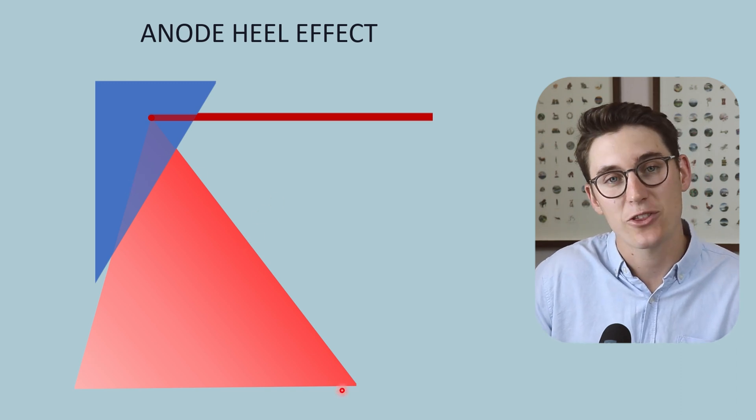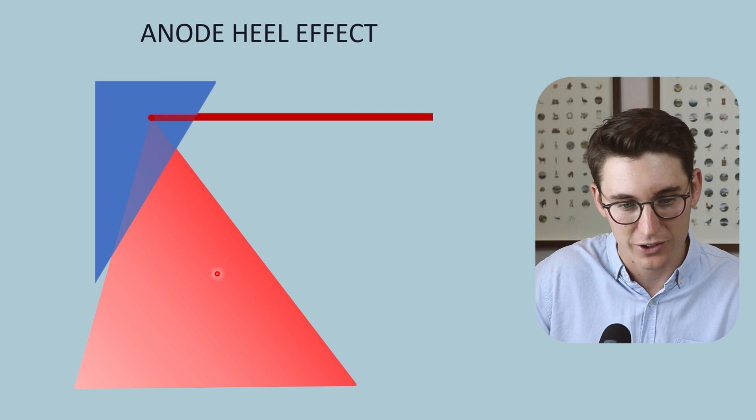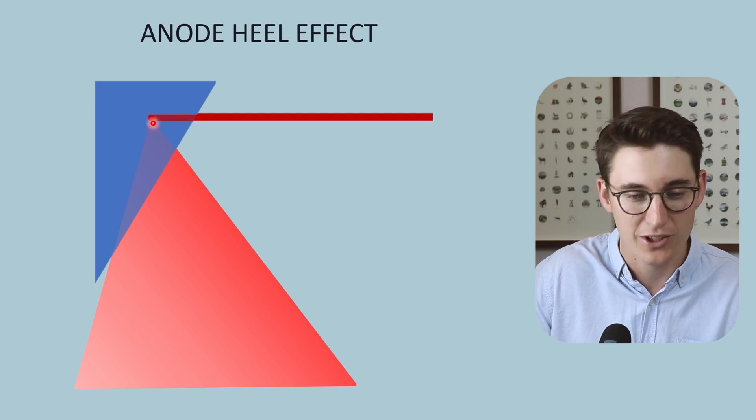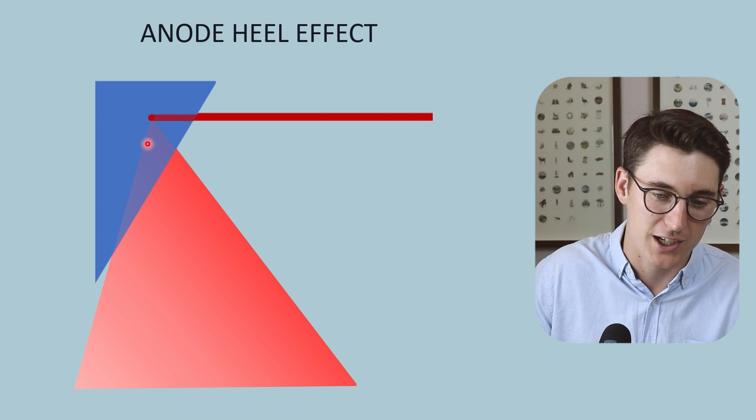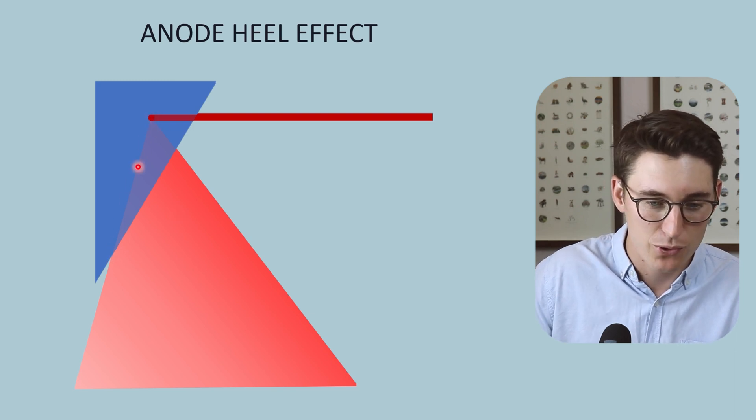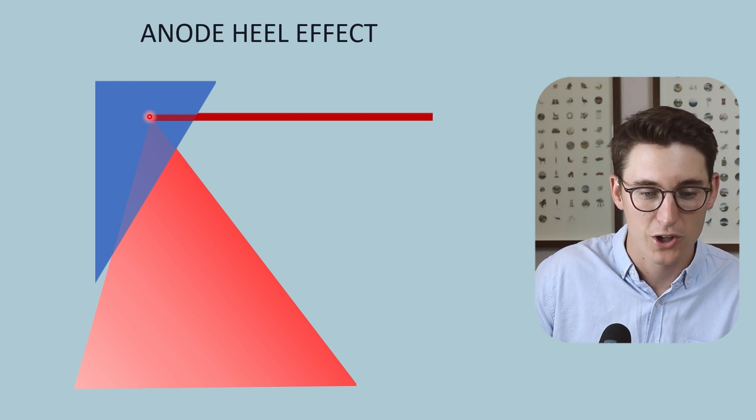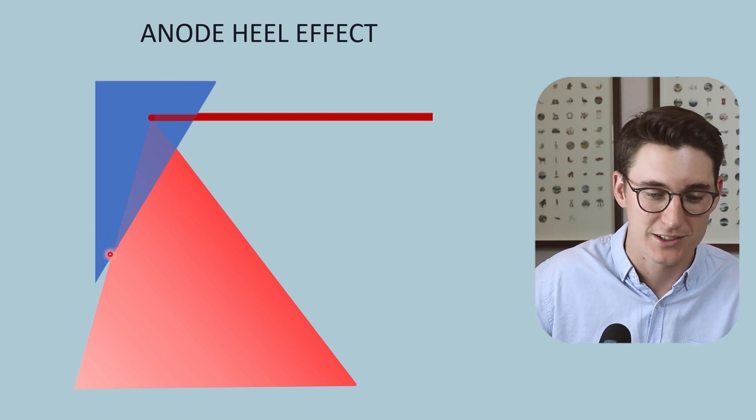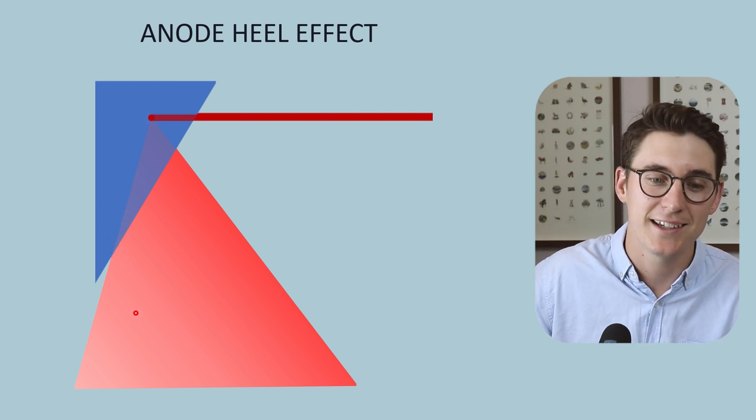Now a proportion of those x-rays will head out towards our patient. Those x-rays on the cathode side of our x-ray field have to travel through a relatively shorter distance of the anode than those on the anode side of our x-ray beam field. Now those that travel through the heel of our anode, this area here is called the heel of our anode, will be attenuated more because they have to travel through a further distance. And that's why this is called the heel effect.